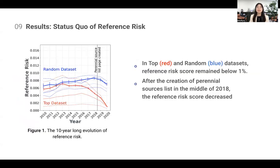Now I will present our results, starting with the evolution of Reference Risk. As we can see from this plot, for both datasets — top and random — the Reference Risk score remained below 1%. We can also notice that after the creation of the Perennial Sources List in 2018, the Reference Risk score decreased in both datasets.